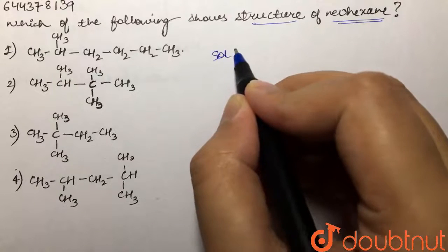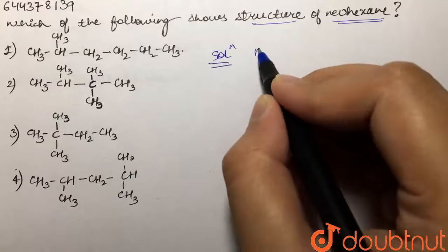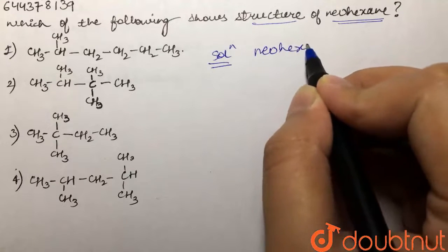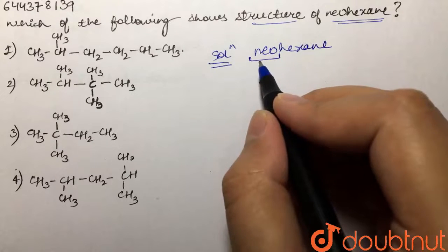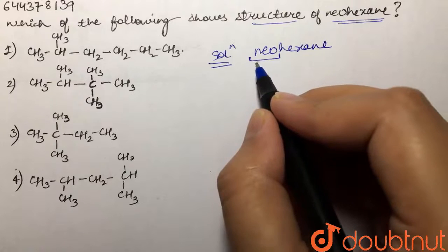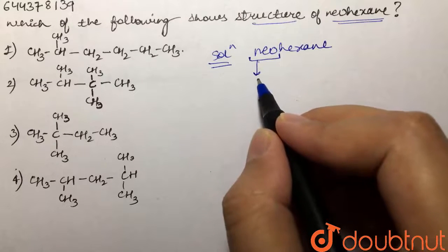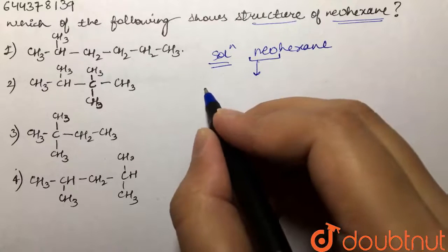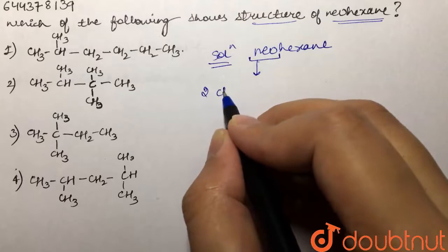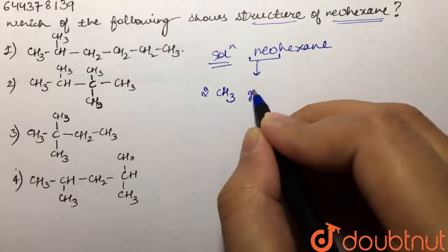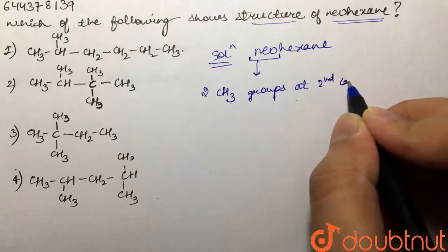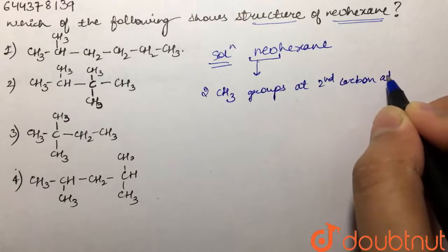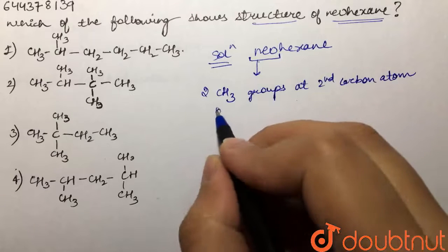Now if we talk about this prefix neo, this is used whenever we have two CH3 groups at the second carbon atom of the parent chain. Whenever we have two CH3, that is methyl groups, at the second carbon atom of the parent chain.